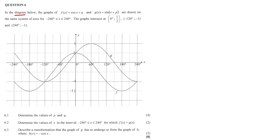In the diagram, the graphs of f(x) = cos x + q and g(x) = sin x + p are drawn on the same system of axes for negative 240 to positive 240. The graphs intersect at (0, ½), (−120, −½), and (240, −1). Question 6.1: determine the values of p and q.